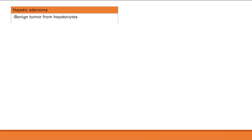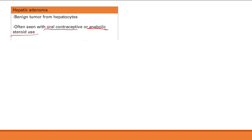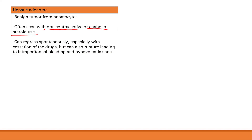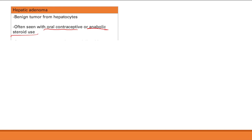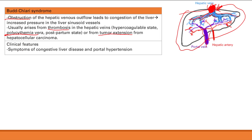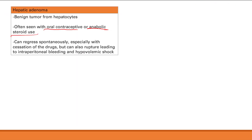Hepatic adenoma is a benign tumor of hepatocytes. The important thing to know is that it's associated with oral contraceptive or anabolic steroid use, because adenomas develop from these increased hormone levels. These can regress spontaneously, especially with cessation of the drugs. However, they can also rupture, causing intraperitoneal bleeding and hypovolemic shock — a serious problem given the liver's extensive blood supply.